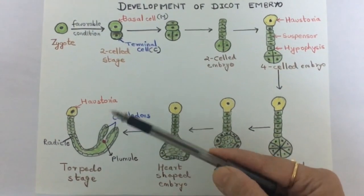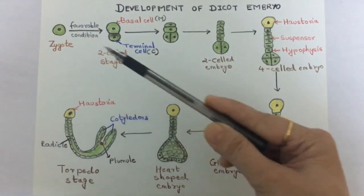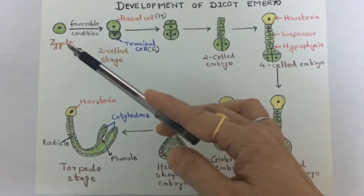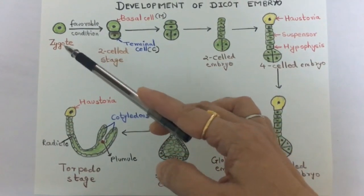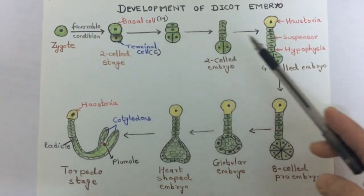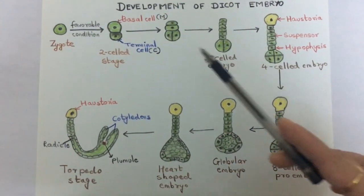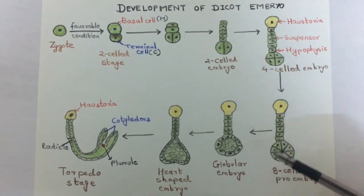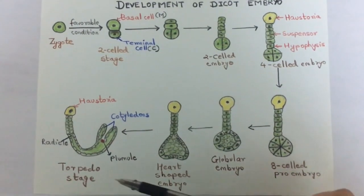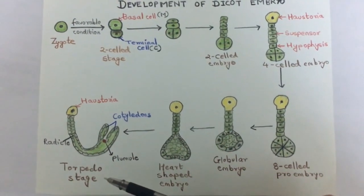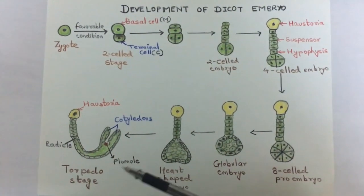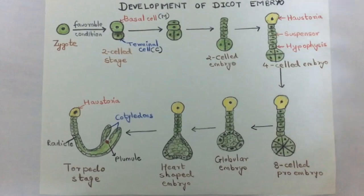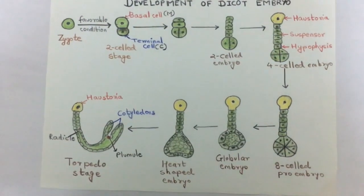This is all about the development of the dicot embryo. I hope you understood how the zygote divides transversely and vertically and finally forms the torpedo stage. Thank you so much.